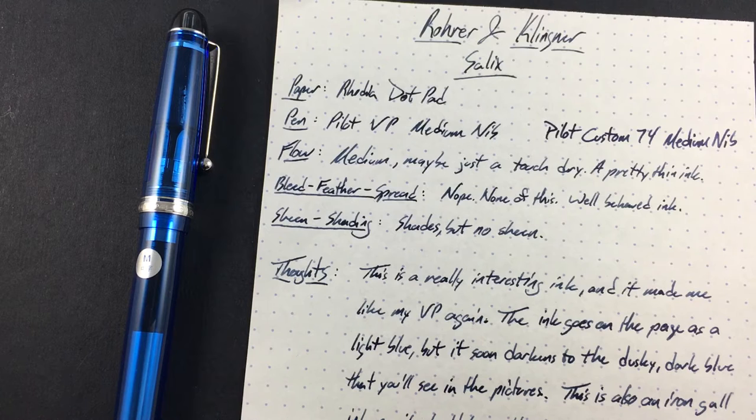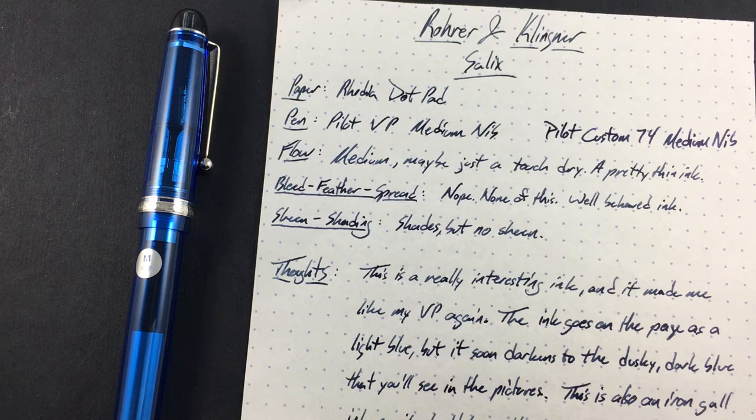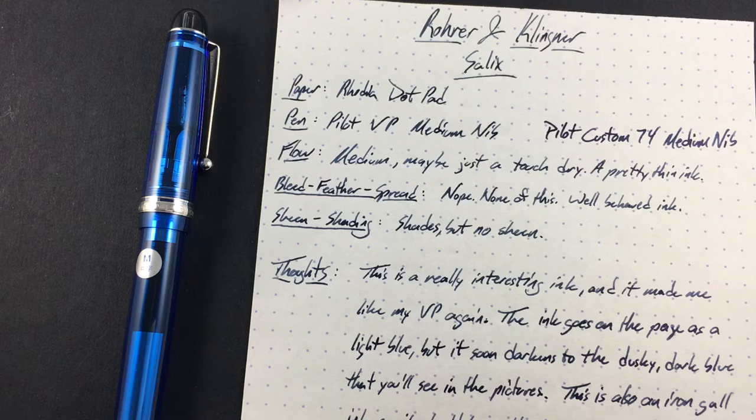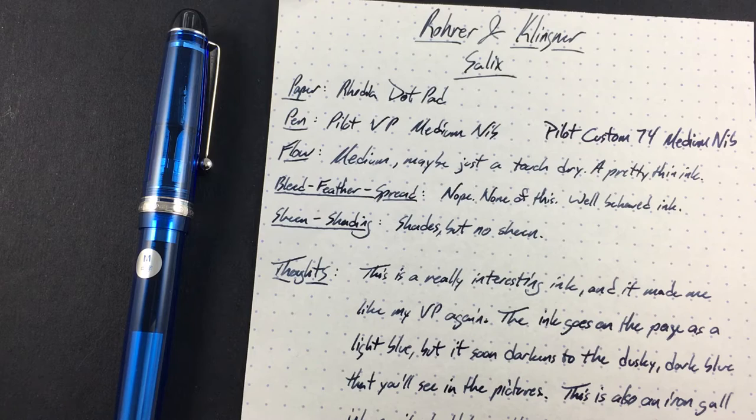but this Salix ink does a really good job with it. It's actually the only ink that will work at all, really, in my vanishing point. I don't know. The other inks work fine, but this one doesn't squeak. It's not too wet. It's not too dry. It's kind of perfect. So I really like it in that vanishing point. So if you have a vanishing point, you don't love the way the nib runs, check out Salix, because it might fix your problem for you.